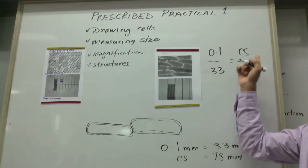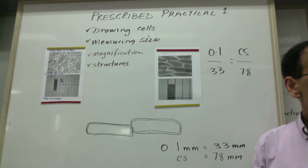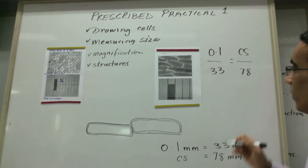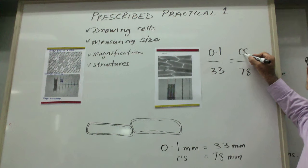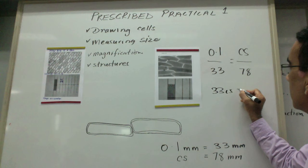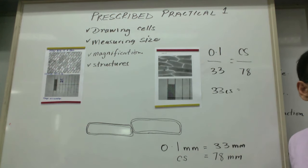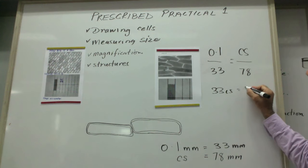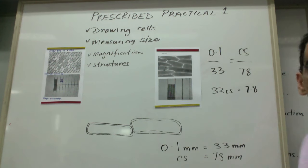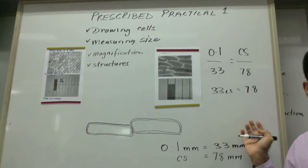And then how can we solve for cell size? What must we do next? Cross multiply, which means you are going to multiply CS by 33, so you will say 33 CS would be equal to 78 times 0.1, which is 7.8. It's all in millimeters.